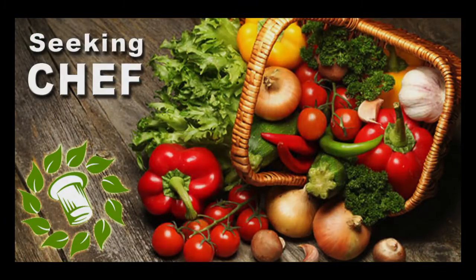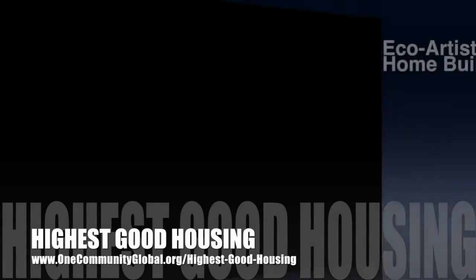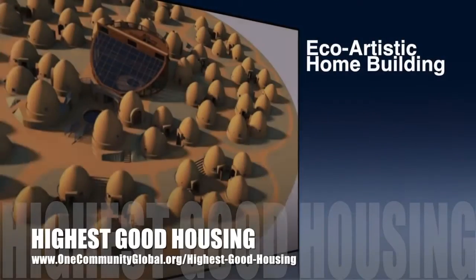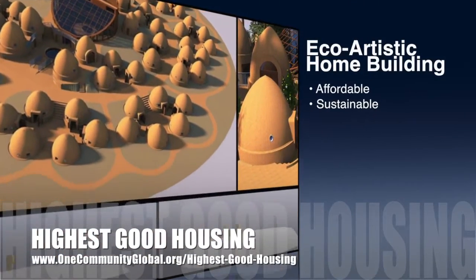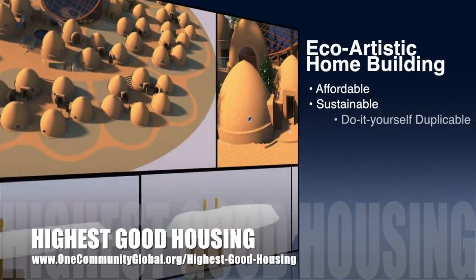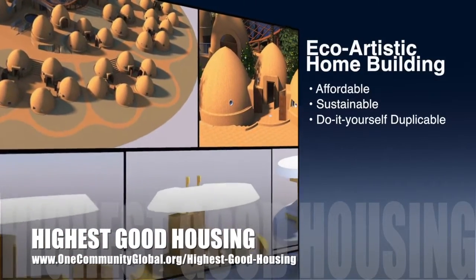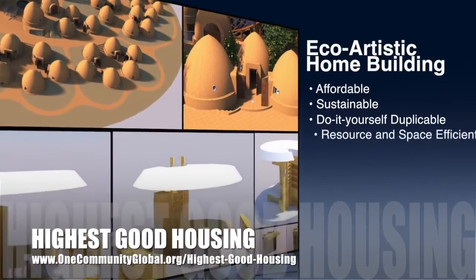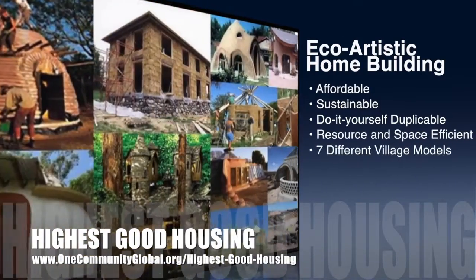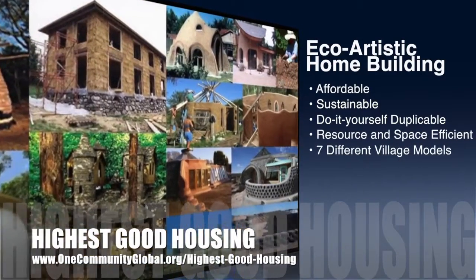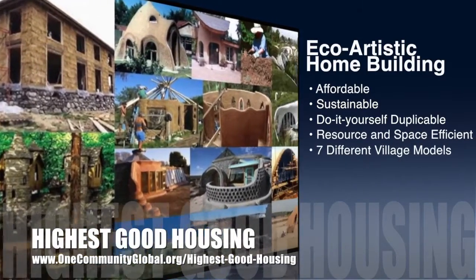The One Community approach to highest good housing is eco-artistic home building that is affordable, sustainable, do-it-yourself, duplicable, resource and space efficient, and consists of seven different sustainably constructed village models.